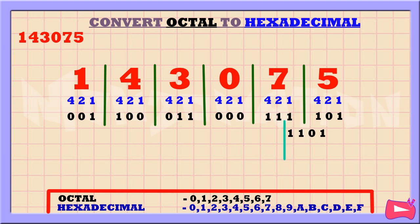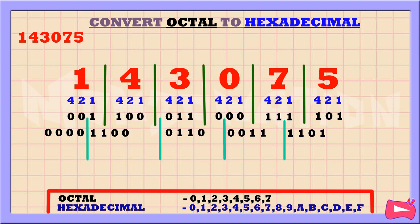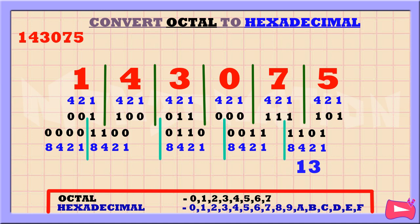Now, the next step is to separate these binary numbers into groups of 4. Then, let's write down 8, 4, 2, and 1 underneath the sets of 4 binary numbers. Then, add up each set of 4. Let's start from the right and add the number that corresponds to binary digit 1. So, 8 plus 4 plus 1 is 13. The hexadecimal equivalent of 13 is D.